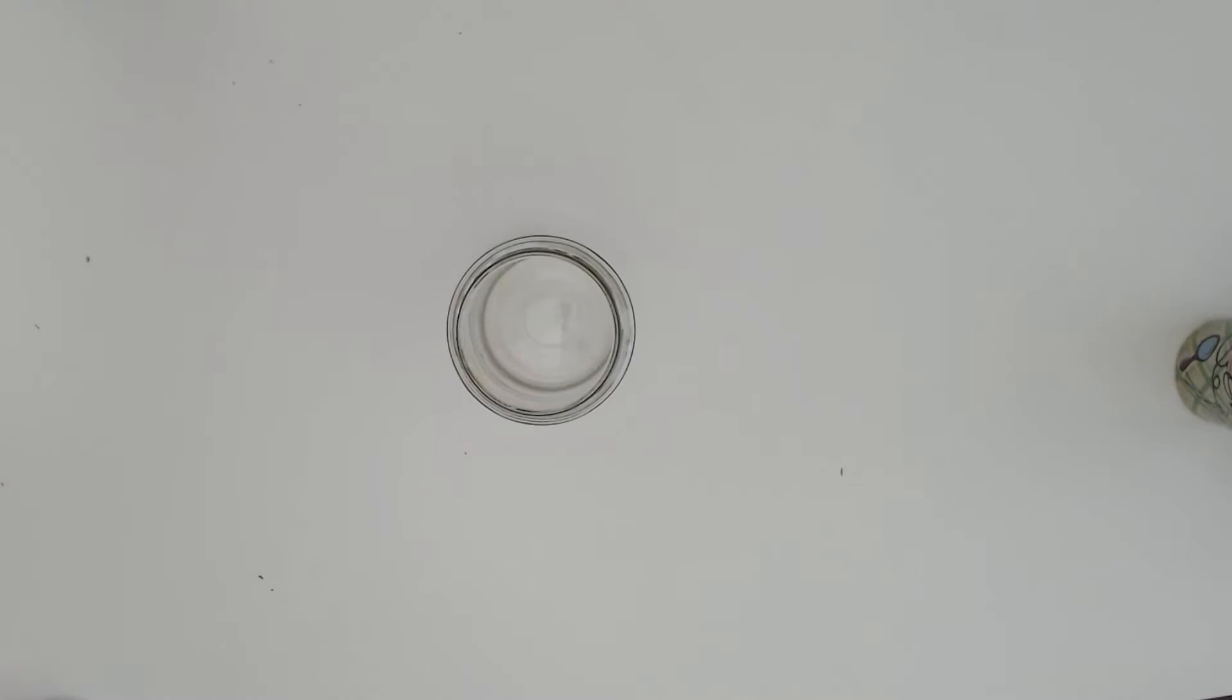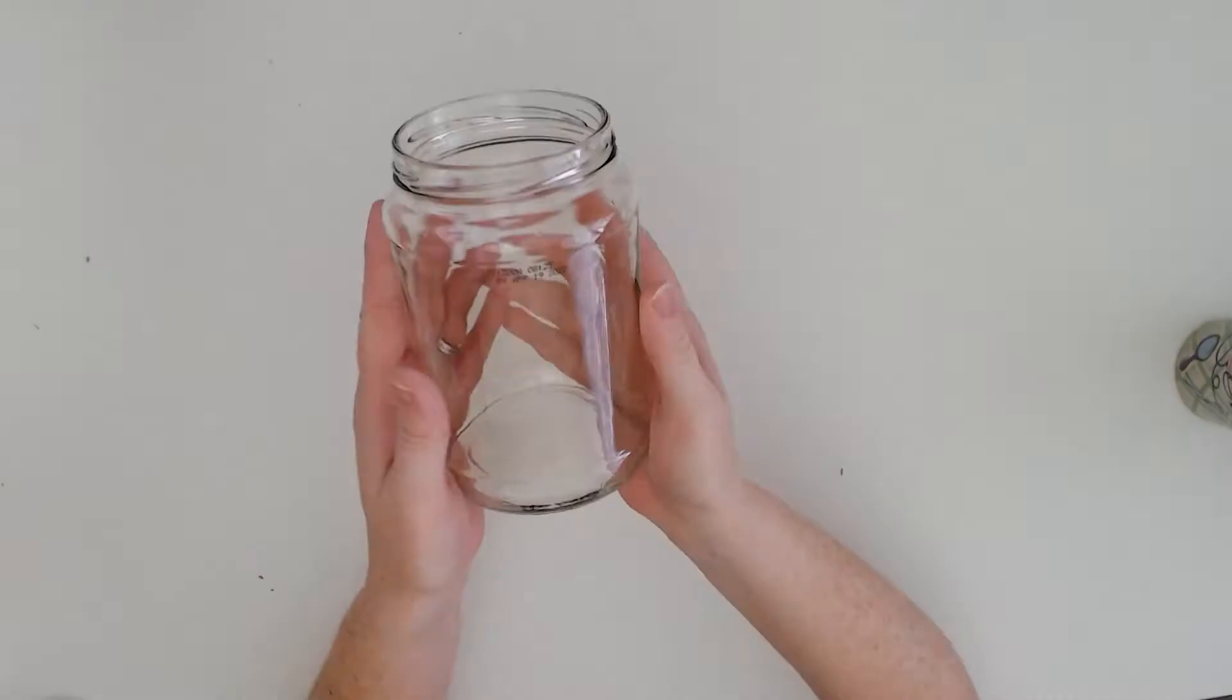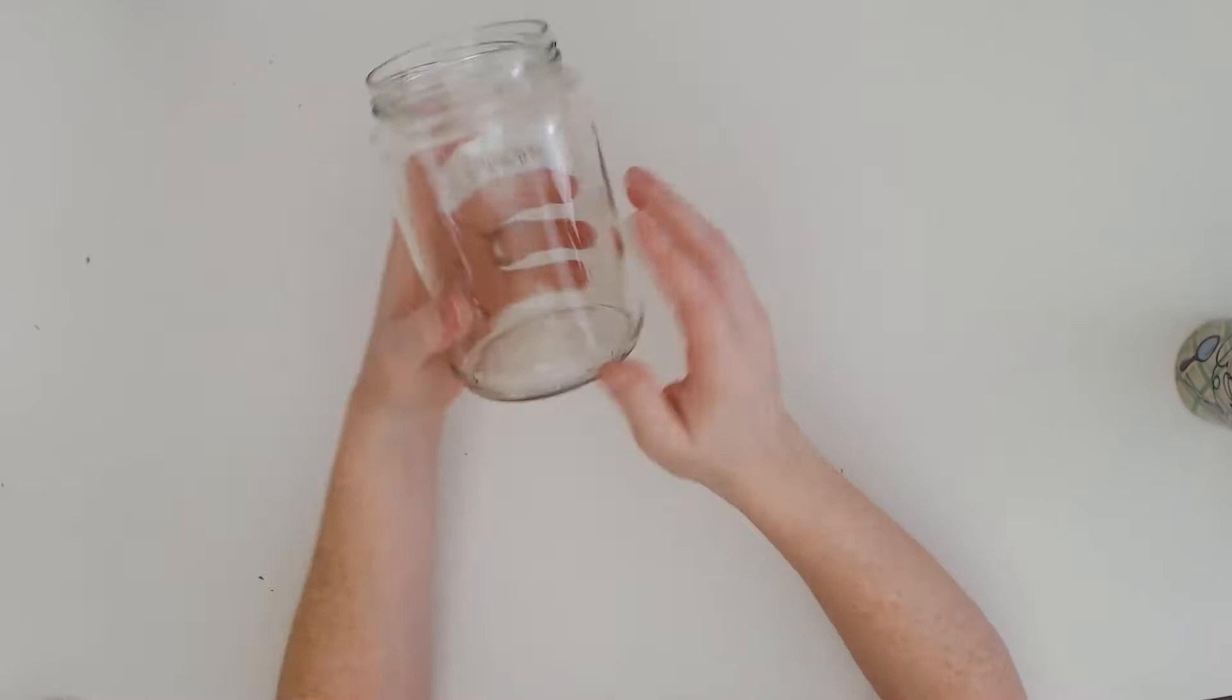Next up we're using an empty glass jar. You could use a pickle jar, jelly jar, whatever. Just be sure to wash it out really well. You'll also need to remove the label. You can soak it in some hot soapy water and that can sometimes do the trick, or you can use the Goo Gone.